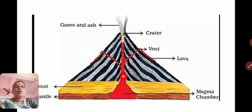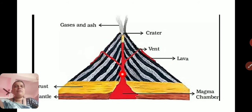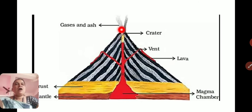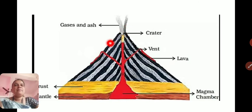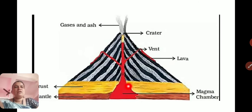After erupting from the crater, this molten magma spreads on the surface and is called lava. When the rock fluid is inside the Earth it is called magma, and after erupting on the surface and coming out from the crater, it is called lava. The crust is the uppermost layer of the Earth, and the mantle is below the crust, where the magma chamber is located.